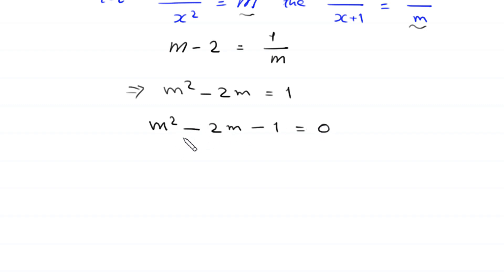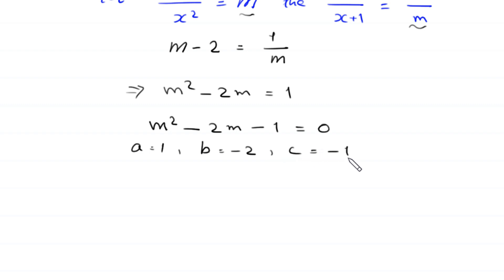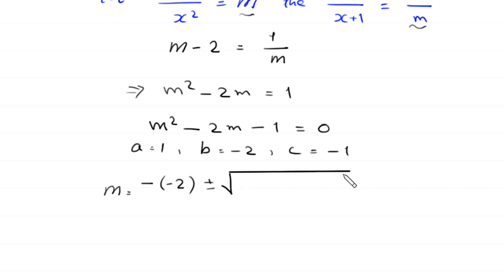This quadratic equation is not factorable, so we solve it by the quadratic formula. In this equation, a equals 1, b equals negative 2, and c equals negative 1. According to the quadratic formula, m equals negative b, which is negative of negative 2, plus or minus the square root of b squared — that is negative 2 squared — minus 4 times a times c, which is 1 times negative 1.